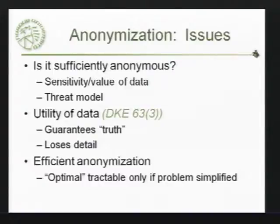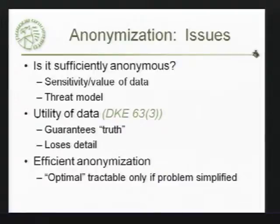A third problem is efficiency. How do we do this efficiently? It turns out that for the general problem, even K-anonymization is NP-hard unless you place some fairly strong restrictions on how you can anonymize.